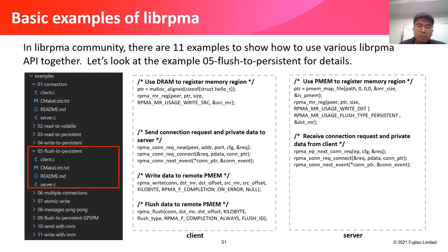In the librpma community, there are 11 examples showing how to use various librpma APIs together. Let's look at example 05, flush to persistent, for details. In this example, the client uses DRAM to register a memory region by rpma_mr_reg, while the server uses P-memory to register its memory region. They establish a connection and exchange private data using several rpma core functions. With the connection, the client can transfer data to remote P-memory using rpma_write and rpma_flush.